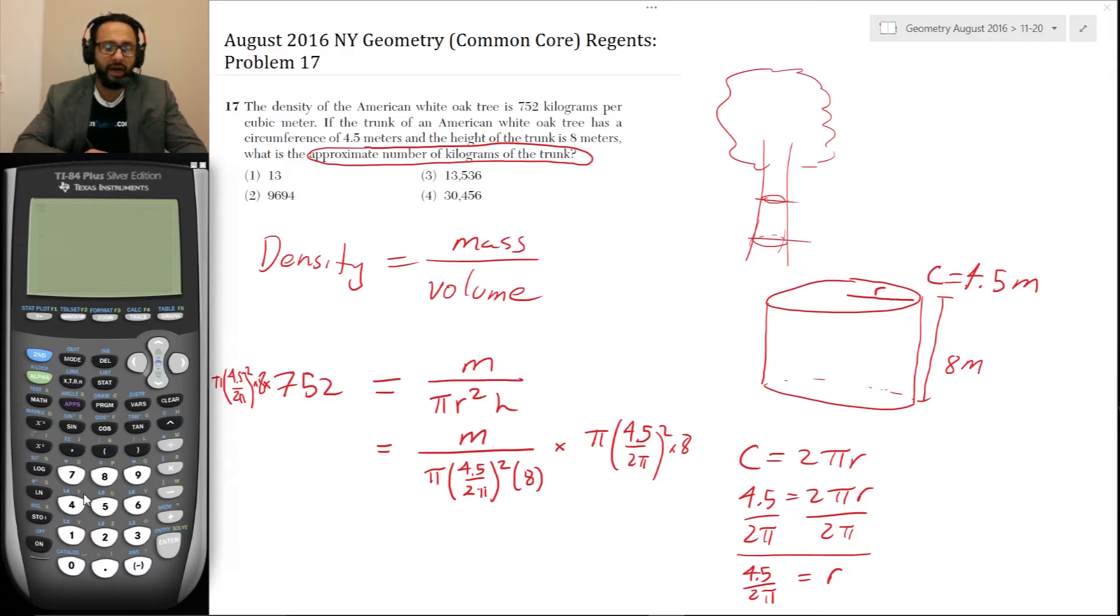So pi, there's a pi button. There it is right there times 4.5 divided by parentheses, 2 pi, 2 pi is in the denominator. So I need parentheses around that squared times 8 times 752.